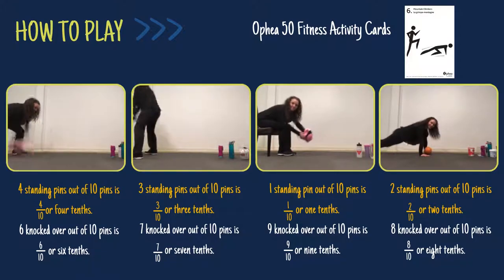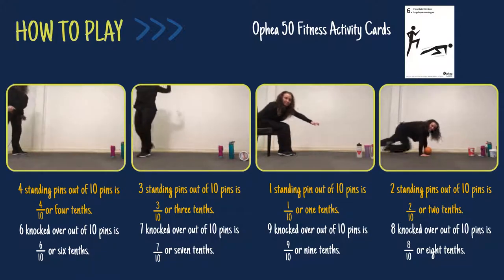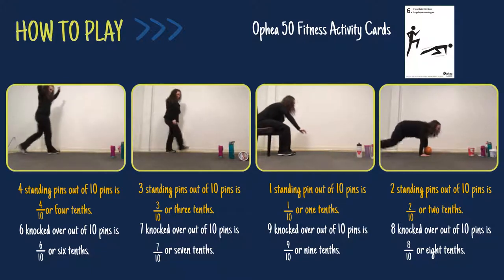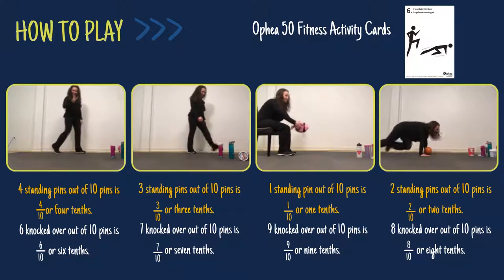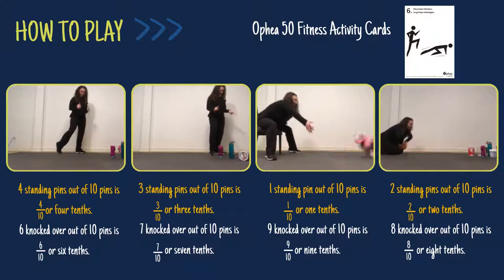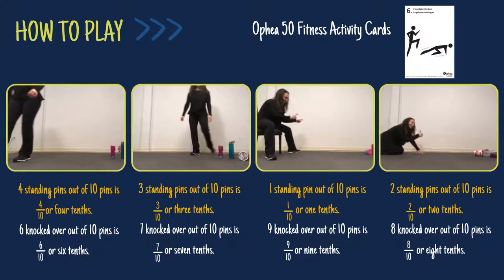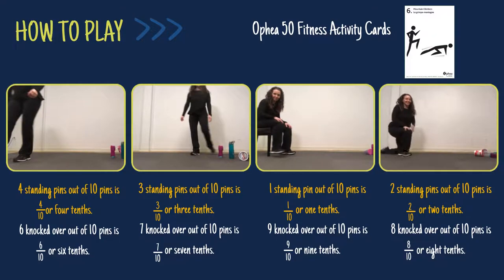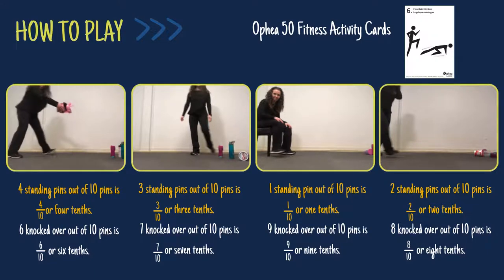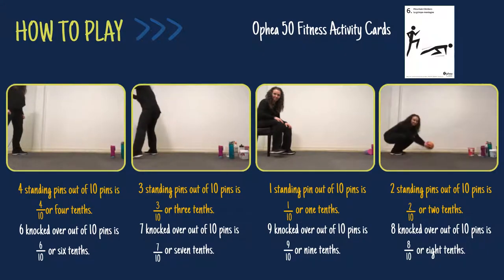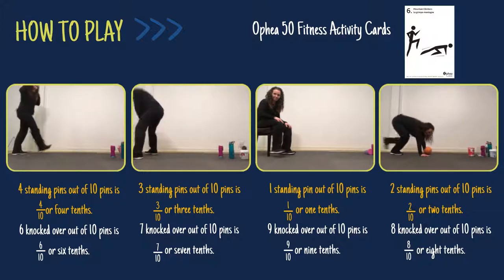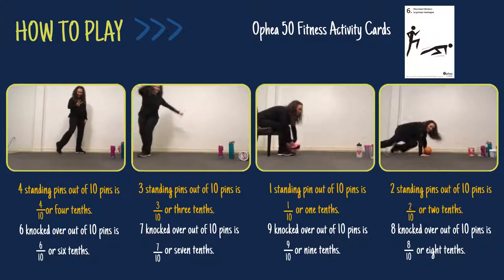The object of the game Bowling for Fractions is to knock down the objects by throwing something at them and then naming the fractional parts that have been knocked over when bowling with a set of 10 items. Today, we will be describing the fractional set that remains standing from a set of 10 — for example, 4 tenths — and the fractional set that has been knocked over — for example, 6 tenths.